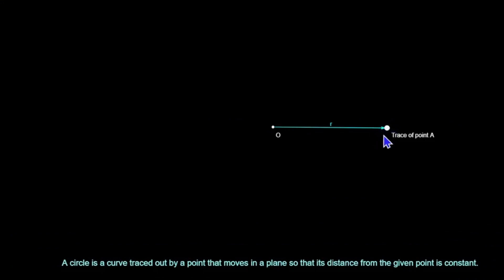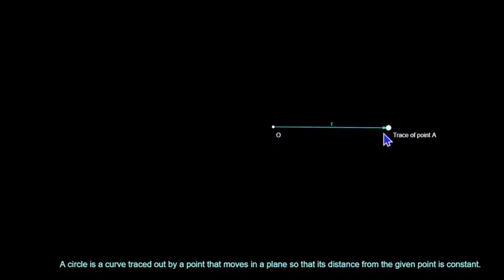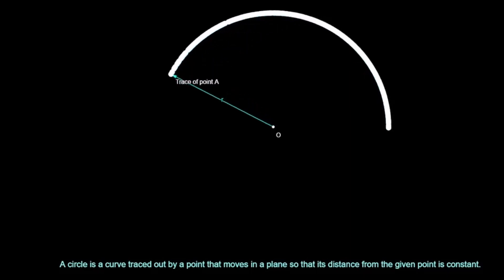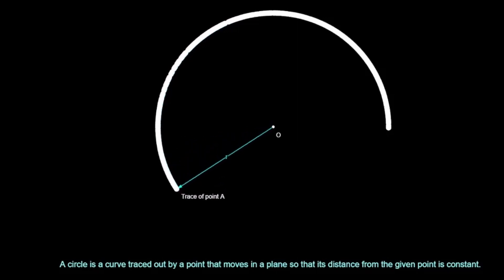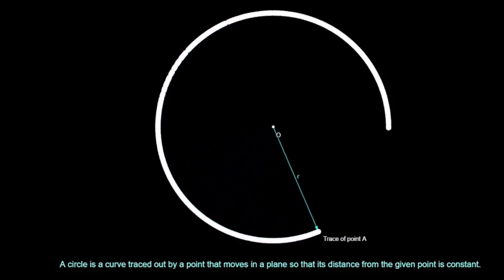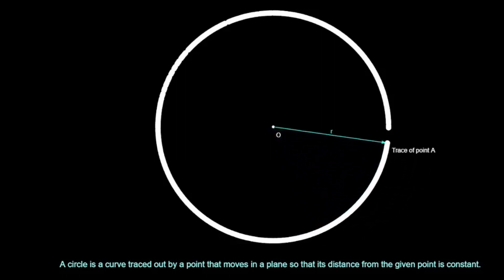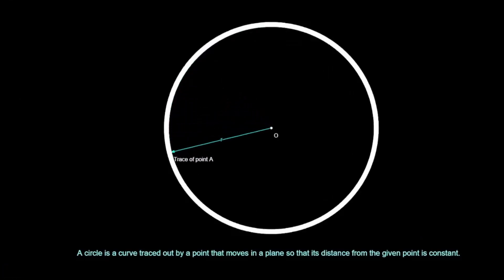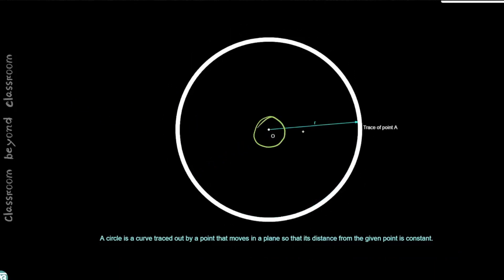Point A is at a distance of R from point O. If point A moves while keeping this distance constant, the trace of point A will form a closed curve, which is called a circle. This complete trace of point A is called the circumference of the circle. So this is the center, this is the radius, and this is the circumference of the circle.